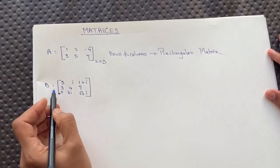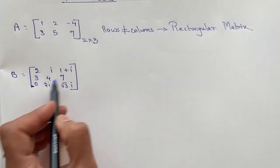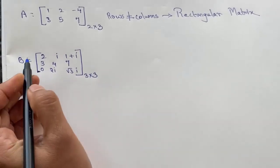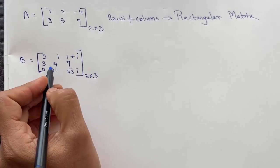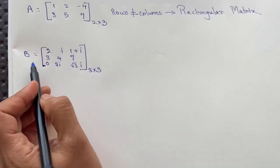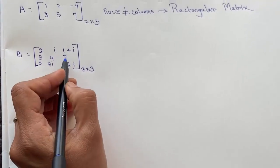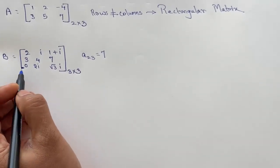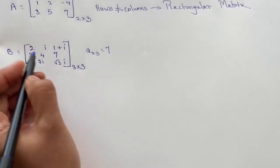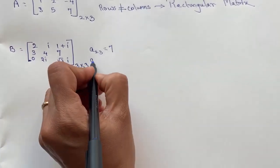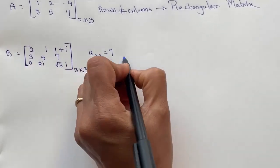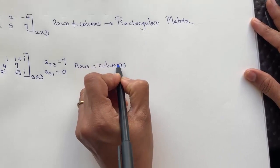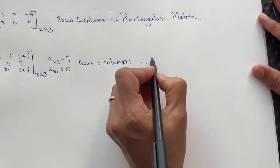Let us take another example, matrix B, having three rows and three columns. Therefore the order of the matrix is 3 by 3. A23 is the element in second row and third column, so its value is 7. A31 is the element in third row and first column, so its value is 0. Here the number of rows equals the number of columns. Therefore this is an example of a square matrix.